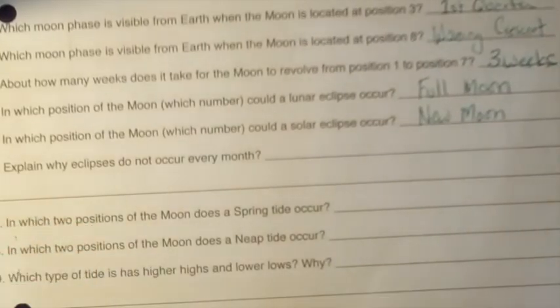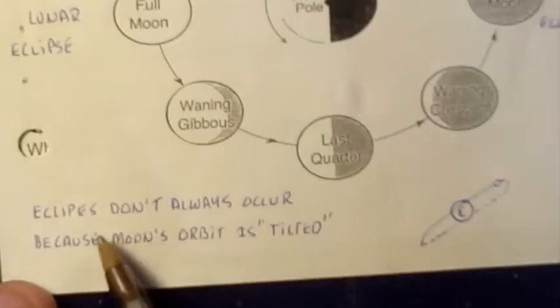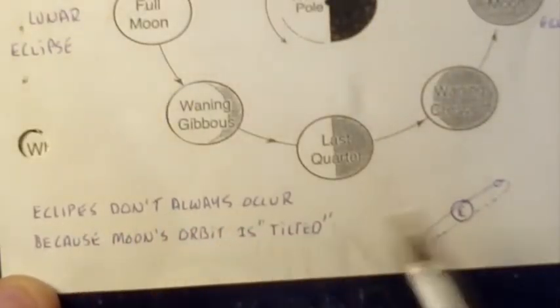Six, explain why eclipses do not occur every month. Eclipses don't always occur because the moon's orbit is tilted.